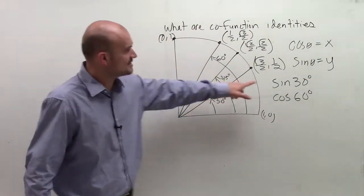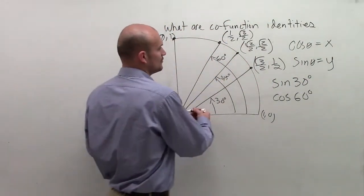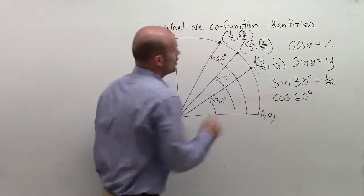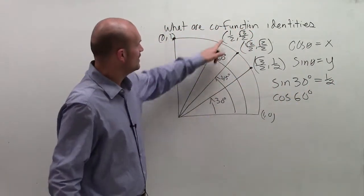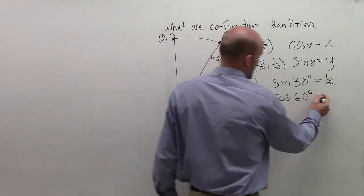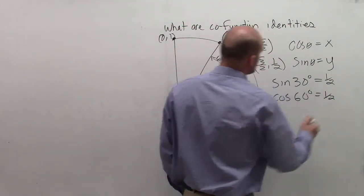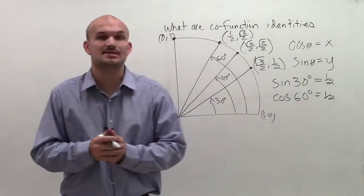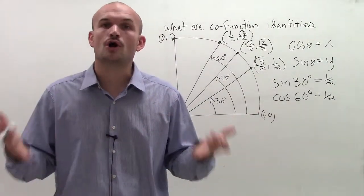And what you guys notice is the sine at 30 degrees is equal to 1 half. Then we notice that the cosine of 60 degrees, is the x value, is also equal to 1 half. So what that means is the sine of 30 degrees is equal to the cosine of 60 degrees. So what that brings into is our co-function identities.